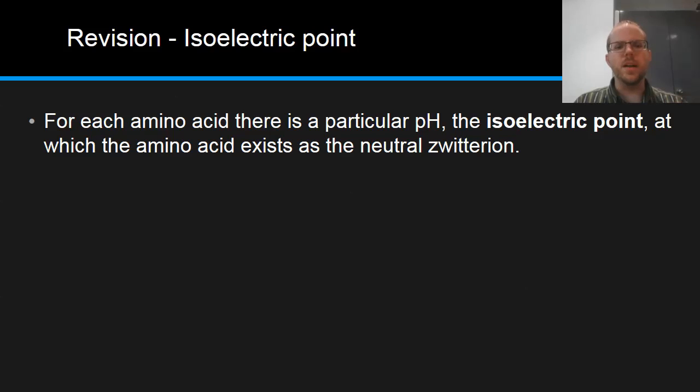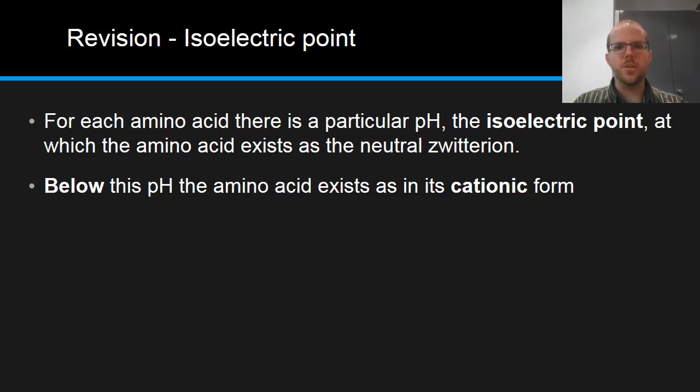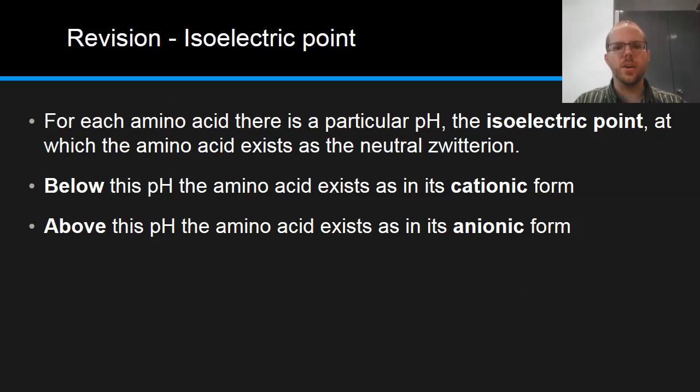We've also talked about the concept of the isoelectric point. That is, for each amino acid, there exists a specific pH, which we call its isoelectric point, where the amino acid exists in this neutral zwitterion form. Below this pH, or at more acidic pHs, the amino acid exists in its cationic form, and above it exists in its anionic form.